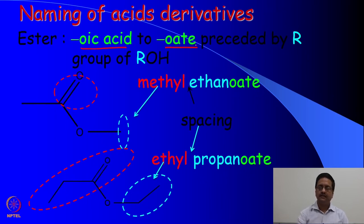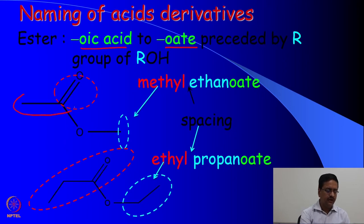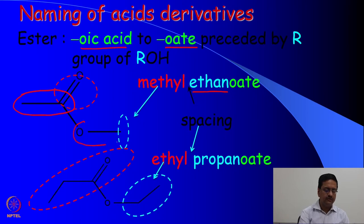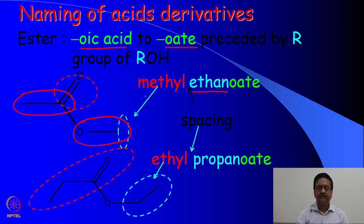In this example, you have one carboxylic acid originating from an acid containing two carbons — it was ethanoic acid. But I have a methyl group connected to the oxygen, so it is the methyl ester of ethanoic acid. The name should be methyl ethanoate.